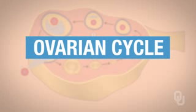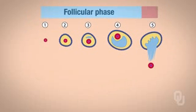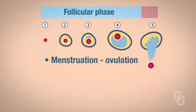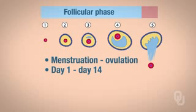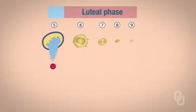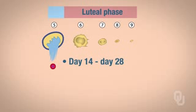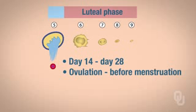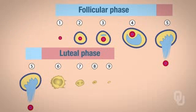We're going to begin with the ovarian cycle. With the ovarian cycle, the follicular phase takes place from menstruation to ovulation, which is from day 1 to day 14. The luteal phase occurs from days 14 to 28, from ovulation to right before menstruation. You need to remember that the ovarian cycle includes the follicular and the luteal phases.